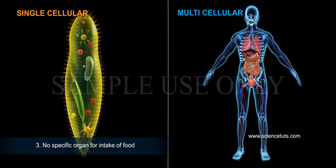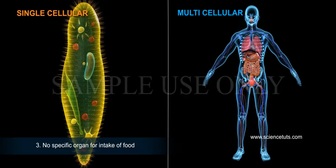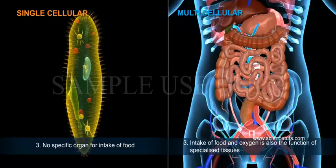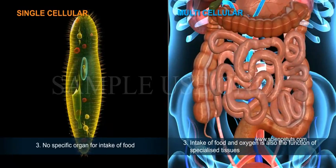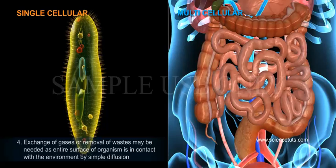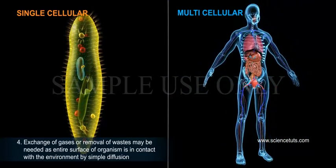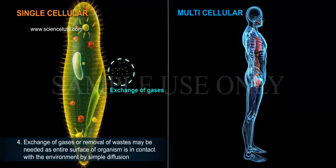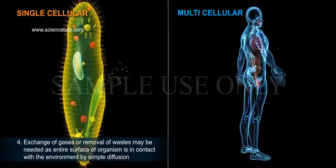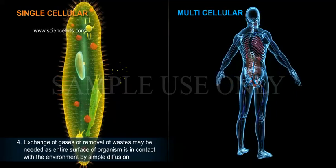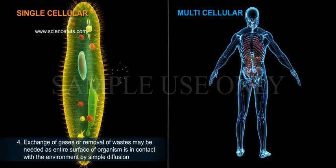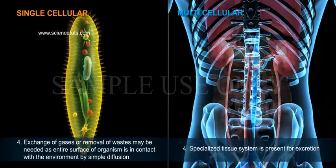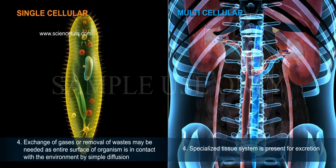3. Single-cellular organisms have no specific organ for intake of food, whereas in multicellular organisms, intake of food and oxygen is also the function of specialized tissues. 4. In single-cellular organisms, exchange of gases or removal of wastes may occur through the entire surface of the organism in contact with the environment by simple diffusion, whereas multicellular organisms have a specialized tissue system present for excretion.